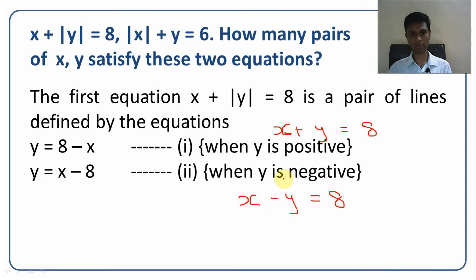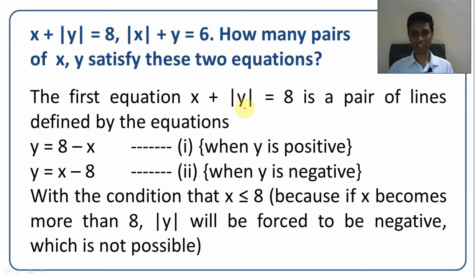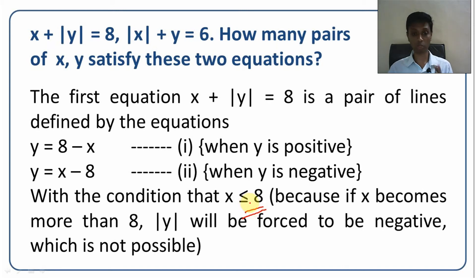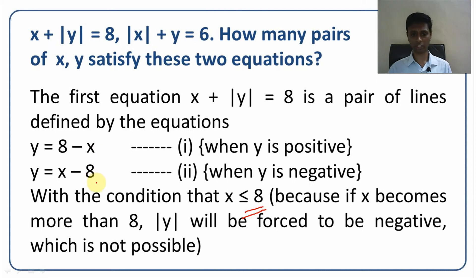Before moving to the second equation, note that in x plus mod y equals 8, modulus of y is always greater than or equal to 0. So this equation is defined only when x is less than or equal to 8. If x is 9, then 9 plus mod y equals 8 is not feasible, since mod y is positive. Therefore, x plus mod y equals 8 gives: y equals 8 minus x when y is positive, and y equals x minus 8 when y is negative — valid only for x ≤ 8.